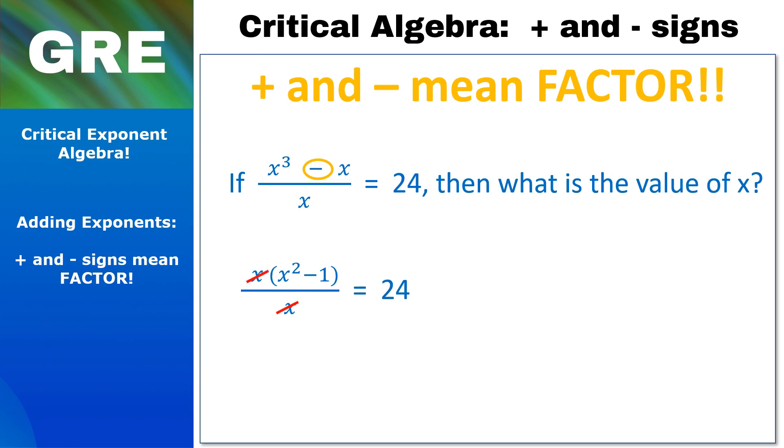Now through the miracle of factoring, that x is no longer added or subtracted to anything anymore. It's multiplied, and we love multiplication because we are allowed to cross stuff off when it's multiplied. So we do that and then we do some algebra. And what we do is we find out that this is the dumbest way possible to write x² equals 25. So we know that x equals 5 or negative 5.